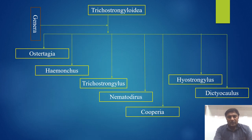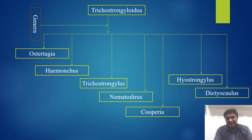The Trichostrongyloidea superfamily has the following genera: number one is Ostertagia, Haemonchus, Trichostrongylus, Nematodirus, Cooperia, Hyostrongylus, and Dictyocaulus.